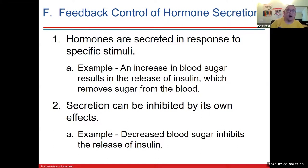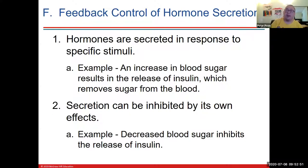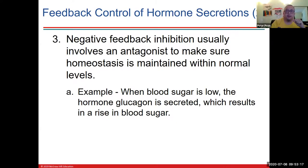Hormones are secreted in response to specific stimuli. For example, an increase in blood sugar results in the release of insulin. Usually this has its own negative feedback response — decreased blood sugar inhibits further insulin release, because if blood sugar gets too low, you can pass out and die. Another example: thyroid hormones in the blood inhibit the production of thyroid stimulating hormone, which then turns off thyroid hormone production — a mechanism to keep levels just right.